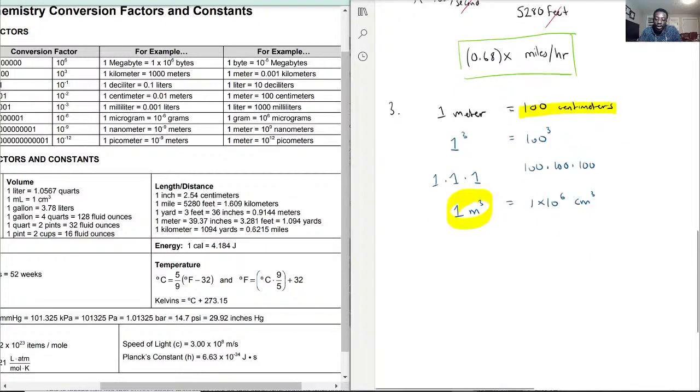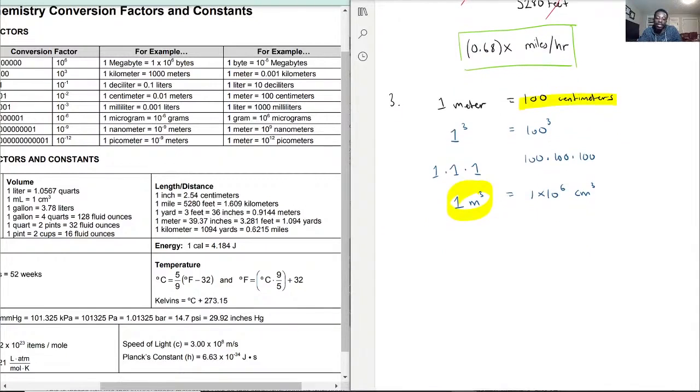So for example, if I said that I had eight meters cubed of an object, how many centimeters is that? I mean, how many centimeters cubed is that? I would first want to make sure that I took the cube root of that, so as I'm simplifying that, I get two meters.